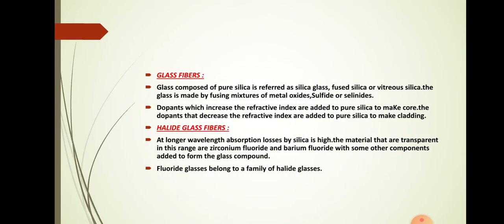Glass is usually composed of pure silica, referred to as silica glass, fused silica, or vitreous silica. Glass is made by fusing mixtures of metal oxides, sulfates, or selenides. Dopants that increase the refractive index are added to pure silica to make the core, and dopants that decrease the refractive index are added to pure silica to make the cladding, since the core refractive index must be higher than that of the cladding.